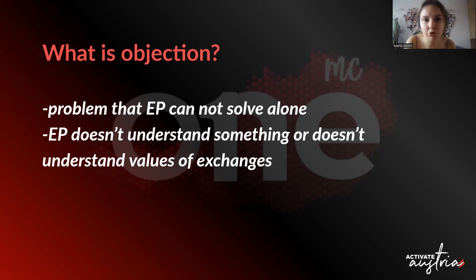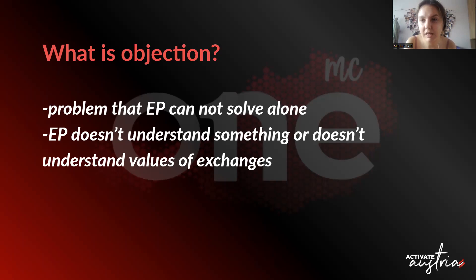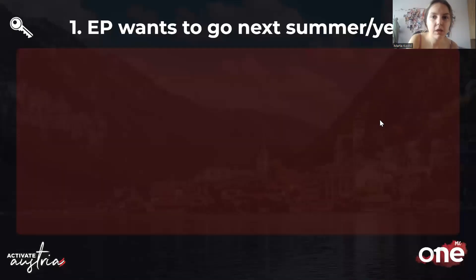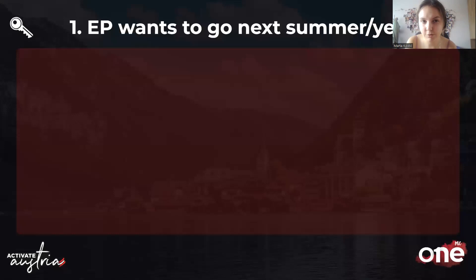When you see that EP really has objections that are actually not real objections — they're just imagining problems — the issue is that they don't understand the value and are only making excuses. In that case, try to explain the value of exchanges once again, or just let them go. We'll go through some objections and I'll give you solutions, but I encourage you to be creative with solving them.